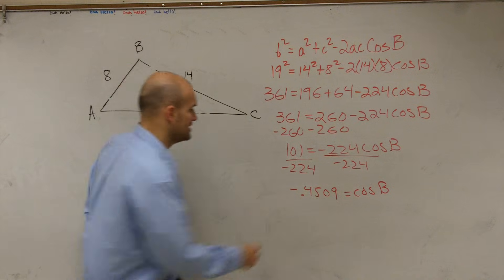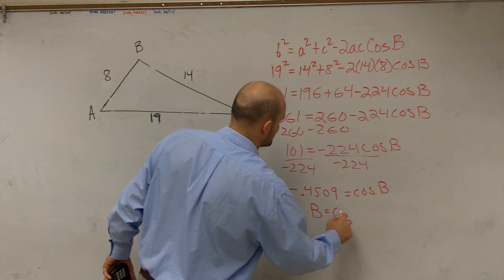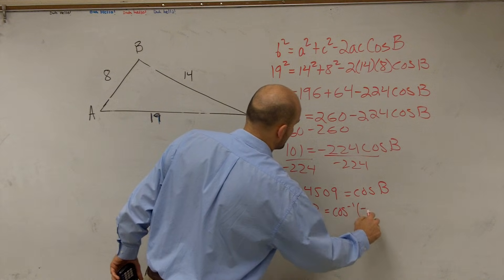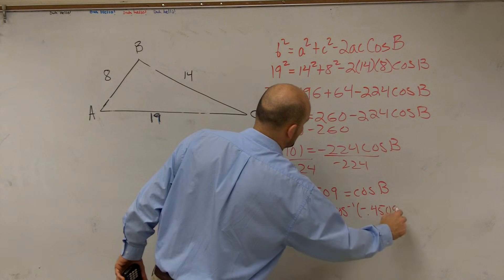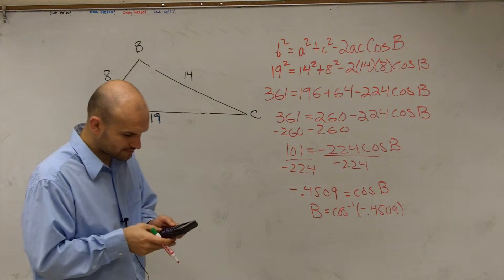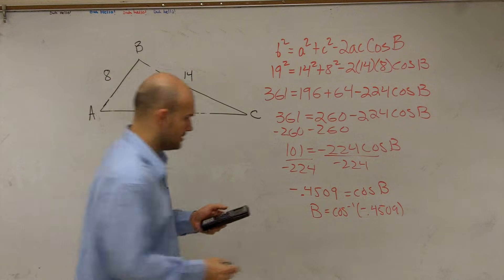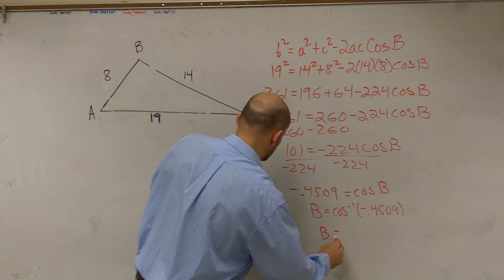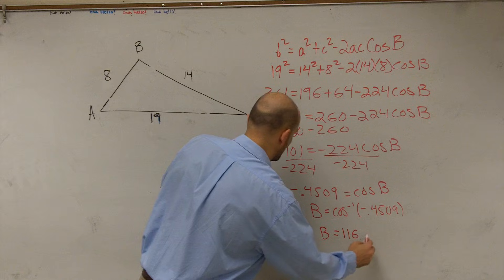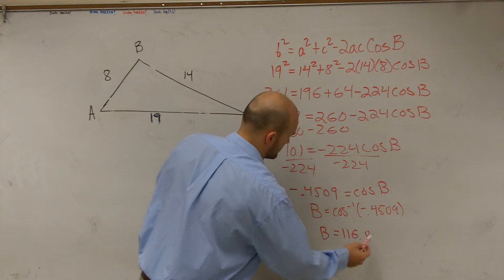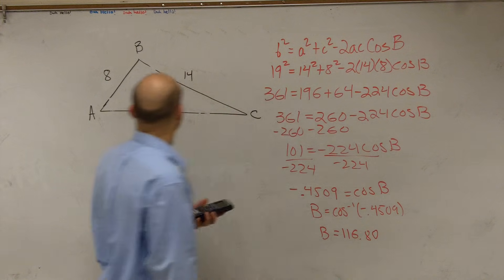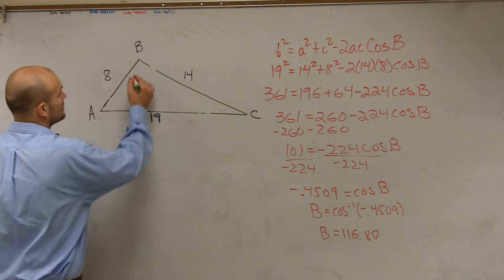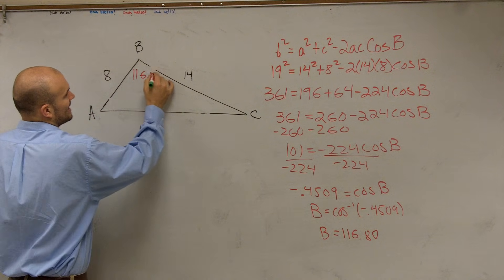And so I can say 101 divided by negative 224 equals a negative 0.4509 equals the cosine of B. Now remember I want to evaluate for B so I can say B equals the inverse cosine of negative 0.4509. Therefore, B is going to equal 116.80 degrees. So you could say B is actually going to be an obtuse angle.